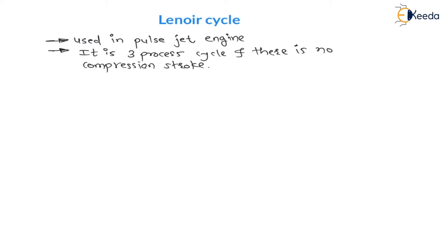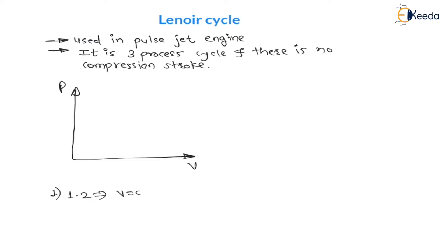So the cycle is like this. In a pulse jet engine, if I draw a pressure versus volume diagram, the very first process is constant volume heat supply. Process 1 to 2: heat is supplied at constant volume. Therefore, if heat is supplied at constant volume, the pressure and temperature will increase.